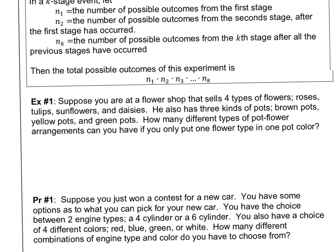So take a look at this. Suppose you are at a flower shop that sells four types of flowers — roses, tulips, sunflowers, and daisies — and also has three kinds of pots: brown, yellow, and green. How many different types of pot-flower arrangements can you have if you only put one flower type in one pot color? This is really two stages: stage one is flowers, stage two is pots.